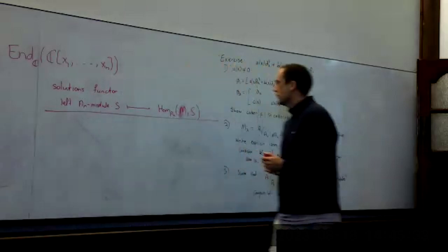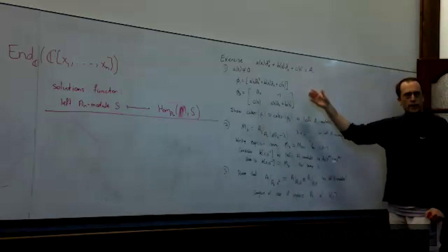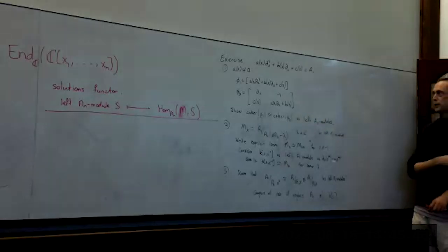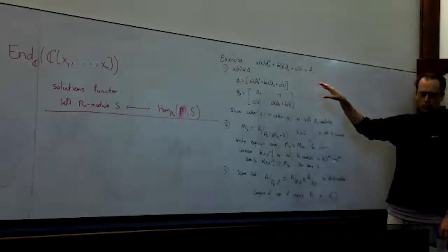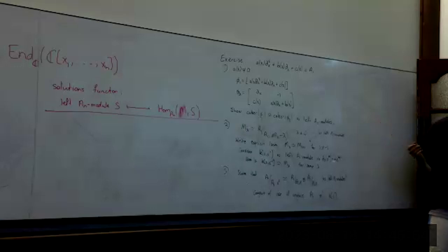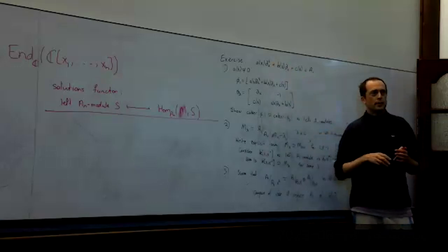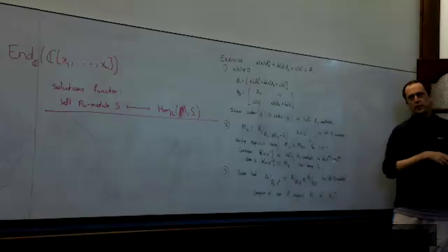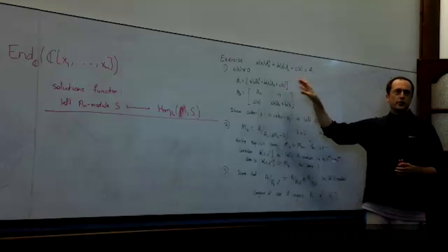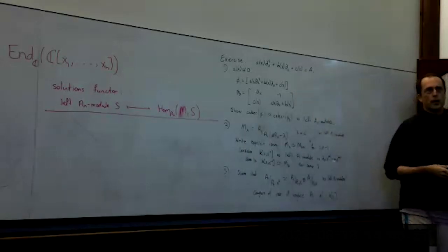I've put some exercises here just to get you familiar — I know this is a little bit fast. The first exercise will be interesting for people who've done an undergraduate course on differential equations, because one of the standard tricks is: if you're in one variable x and you have a differential equation of order n (in this case n=2), there's a standard trick which says solving that is the same as changing it into an equivalent system of n first-order differential equations. The exercise is just to write down what that means in terms of A_n modules when n=2.